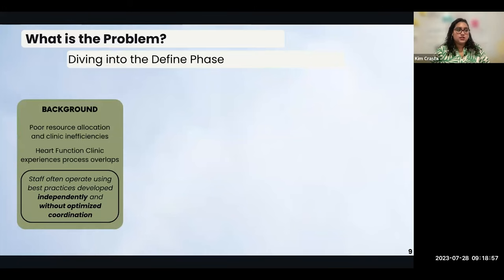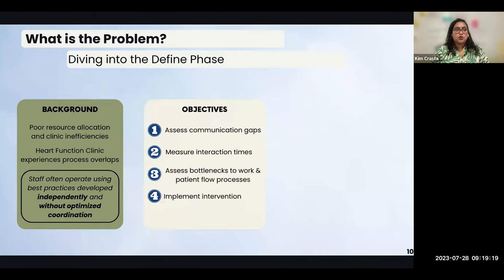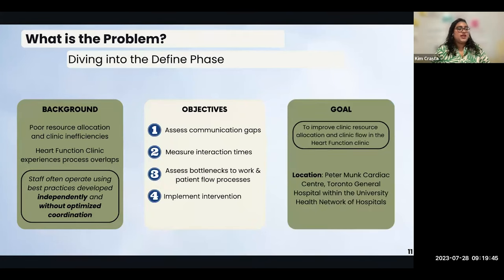Our learnings during the discovery helped us understand and articulate the areas for improvement: staff within the clinic often operate on best practices developed independently and without optimized coordination. This creates an overlap between tasks, ultimately leading to redundancies at the clinic level, further exacerbating resource constraints. As such, our overall objective was to enhance and formalize clinic processes while minimizing interferences and redundancies. We achieved this through specific objectives: identifying communication gaps, measuring interaction times, identifying bottlenecks to workflow and patient care processes, and implementing interventions considering efficiency, stakeholder preference, and quality of care. Ultimately, we aimed to improve clinic resource allocation and overall workflow.